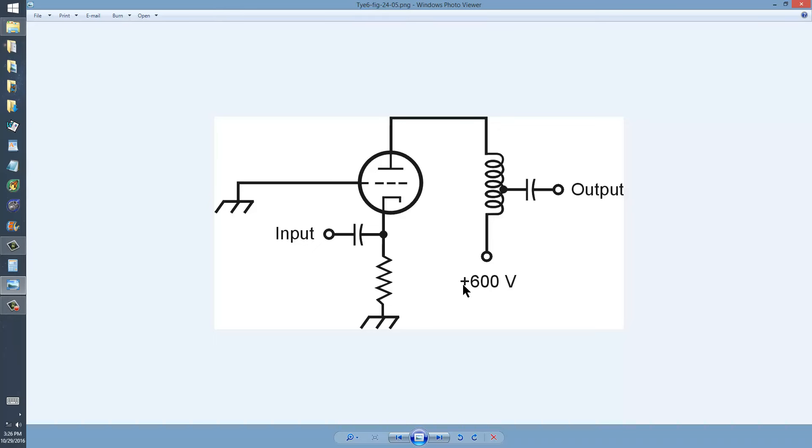Again, in this example, we're using a positive 600 volts, a dangerous voltage as the power supply. The output circuits are the same, an impedance transformer with a capacitor, a blocking capacitor, to prevent the output, whatever that might be, from short-circuiting the radio frequency energy to ground and defeating the purpose of the amplifier.